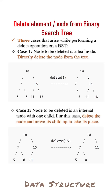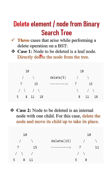To delete a node from the binary search tree, there are three cases. Case one: if the node to be deleted is a leaf node, directly delete the node from the tree. For example, five is a leaf node — we directly delete it. If you want to delete 18, you directly delete it because it's a leaf node.